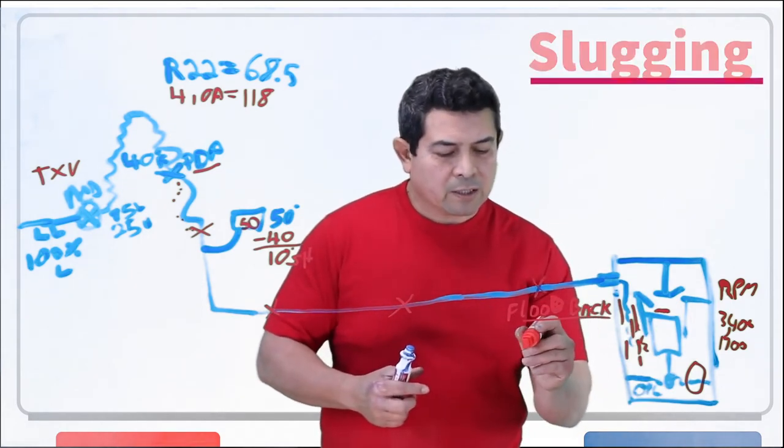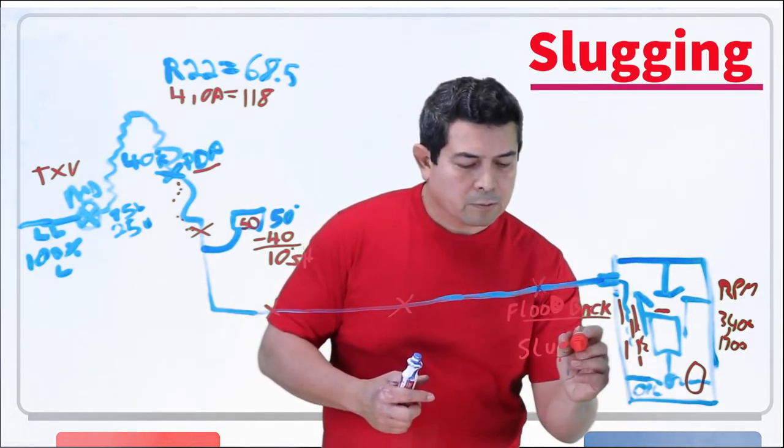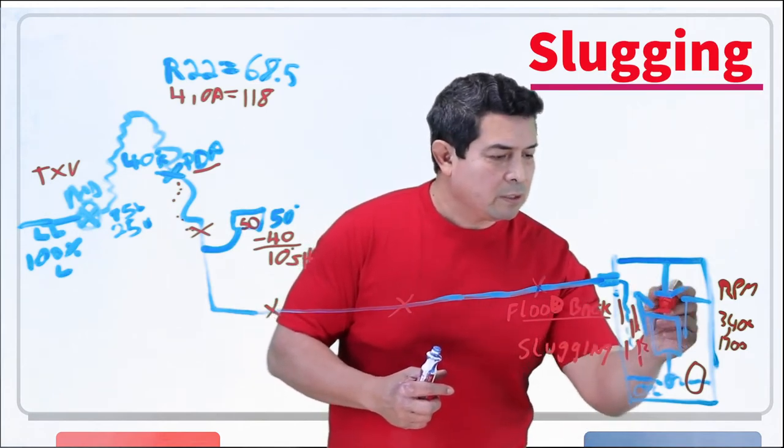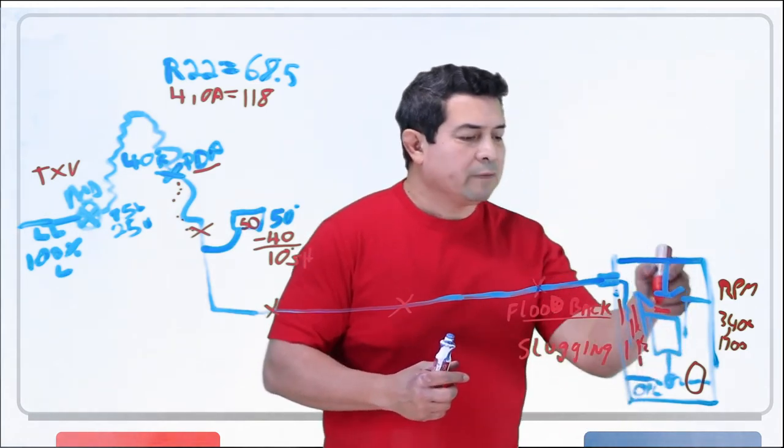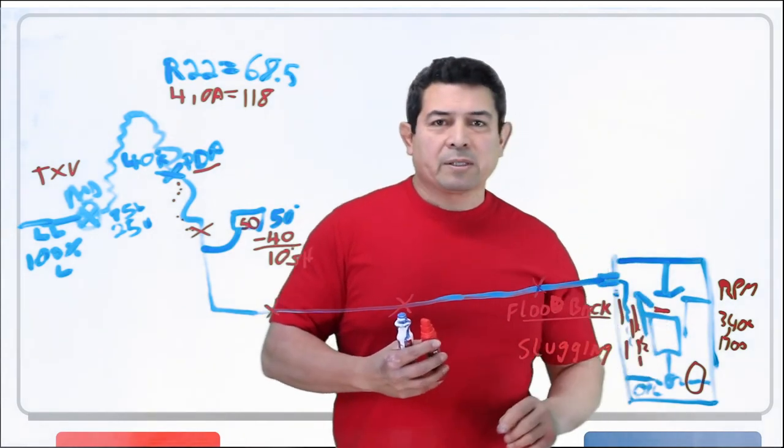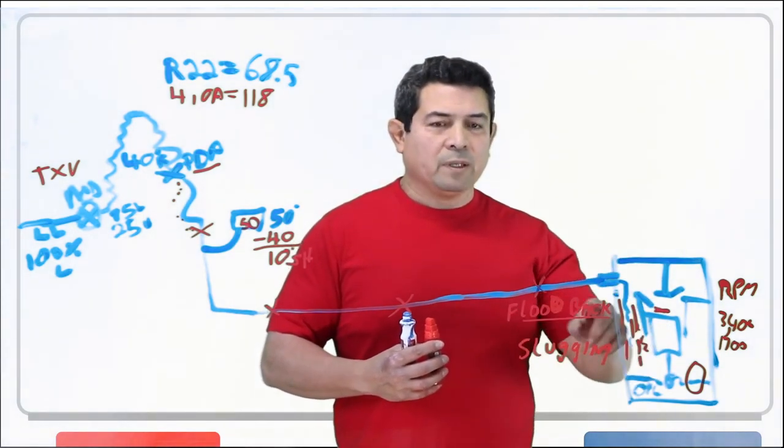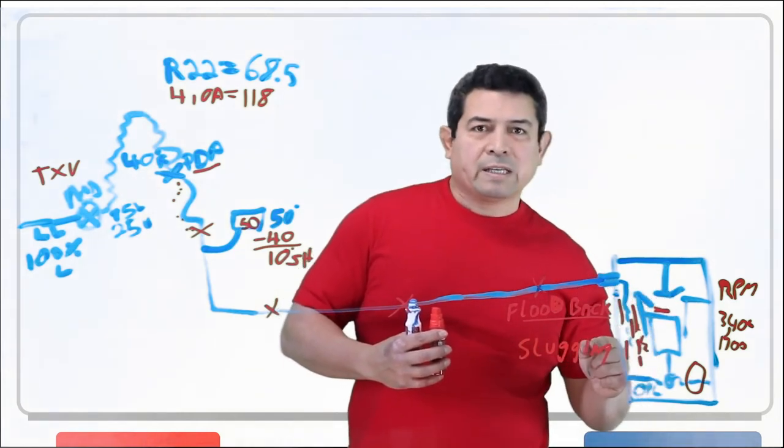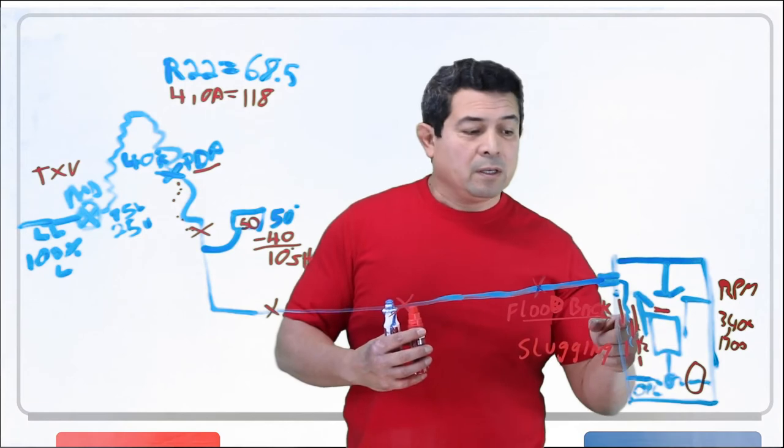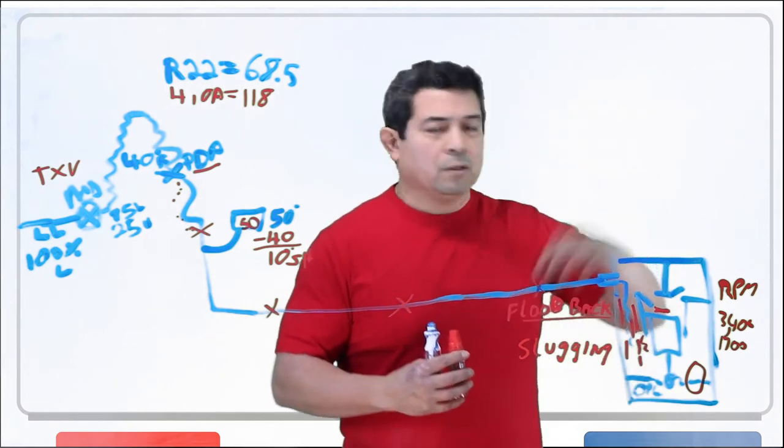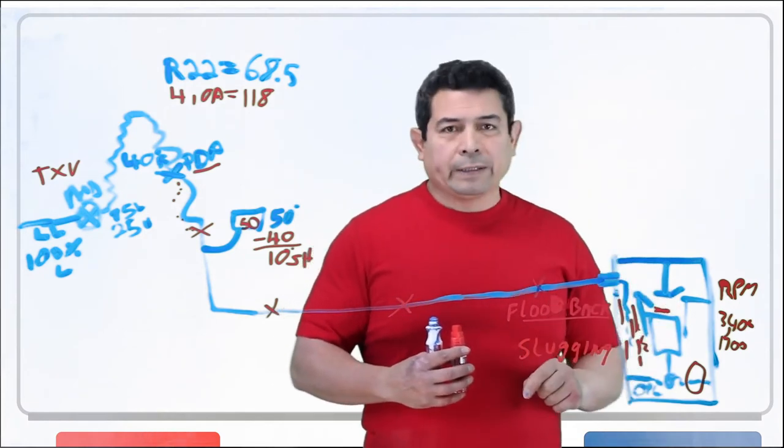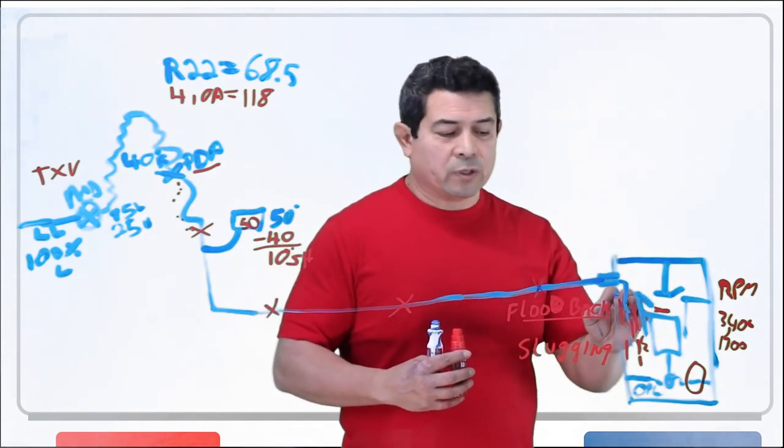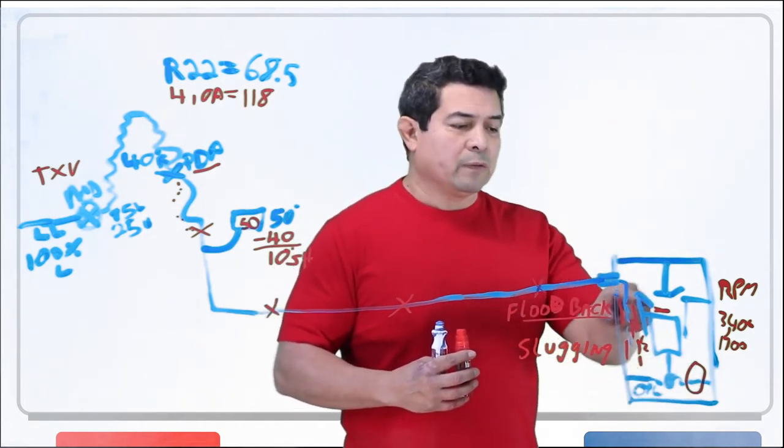Then you have what they call slugging. Slugging is when liquid gets up here. You get a slug of liquid up on top of the piston. First you get flood back, then you get slugging. That piston comes up. It cannot compress that slug of liquid in there and it's going to destroy the compressor. What kind of liquid? Well, it could either be refrigerant, liquid refrigerant, or it could be oil that's up here.